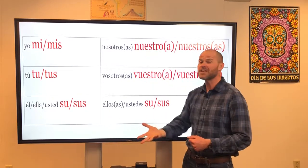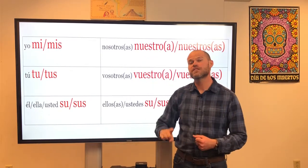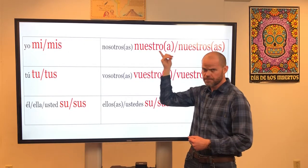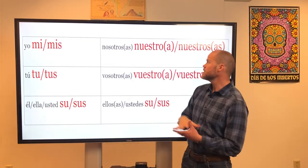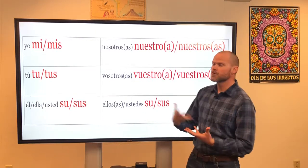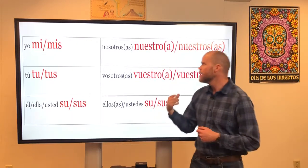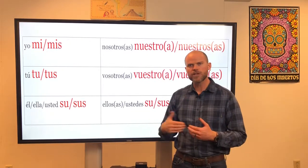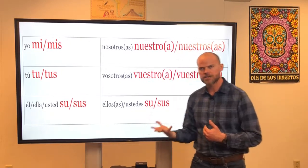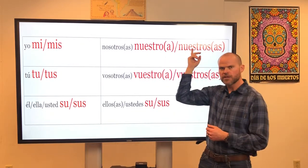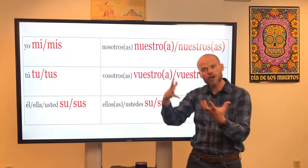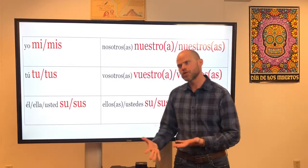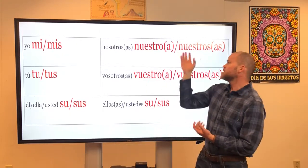If the thing that I'm possessing is singular and feminine, I would use nuestra. If the thing that we are possessing is plural and masculine, I would use nuestros. And if the thing that we are possessing is plural and feminine, I would say nuestras.